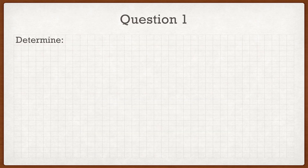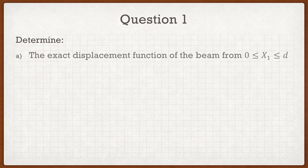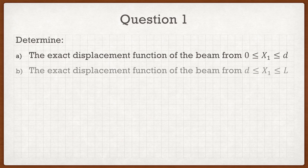The question wants us to do a variety of things. The first part is to find the exact displacement function of the beam from 0 to D, and the second part is to find the exact displacement function from D to L. It's very important to notice that the beam is subjected to a point load which creates a discontinuity, so for the exact solution in parts A and B we have to split the beam up into two regions.